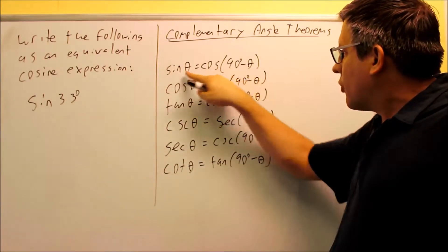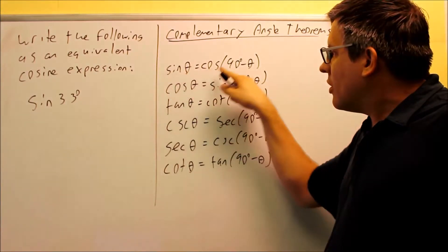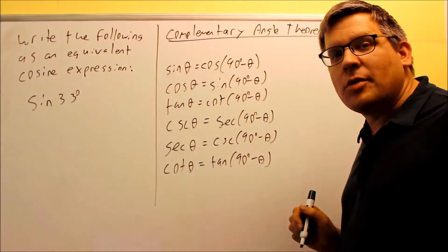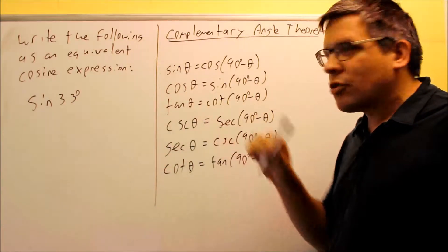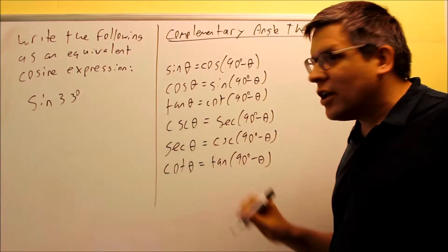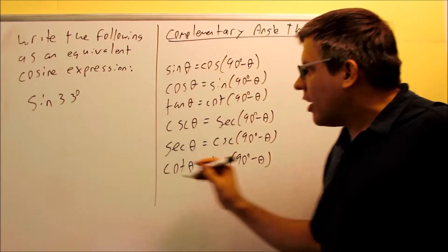For sine, we have the very first formula here. Sine theta is the same thing as cosine of 90 minus theta. So my 33, the 33 is going to be my theta. So I'm going to write the formula out.